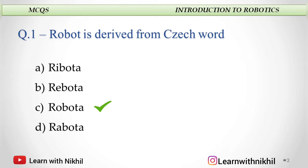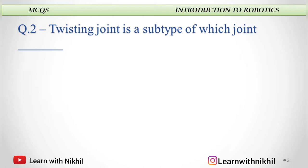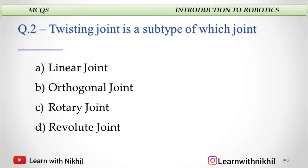Next question: Twisting joint is a subtype of which joint? Linear joint, orthogonal joint, rotary joint, or revolute joint? Twisting joint is a type of a rotary joint.